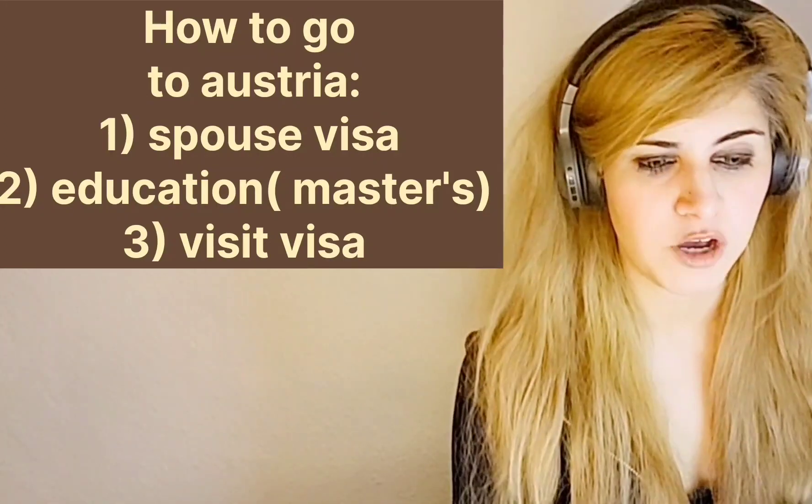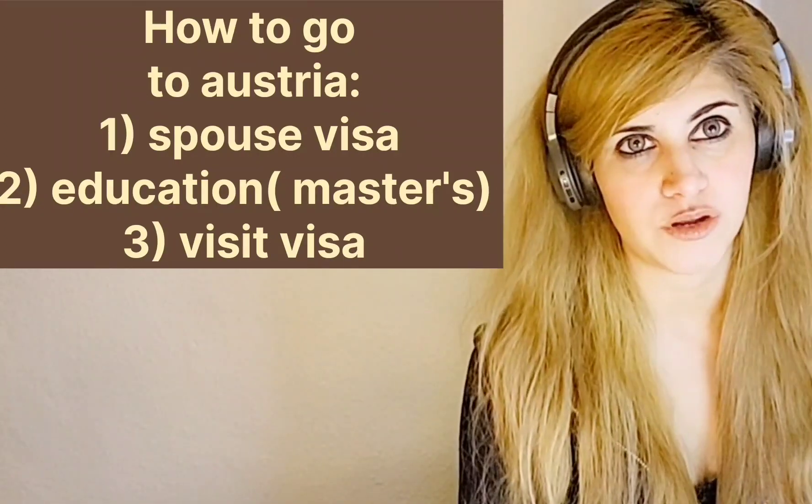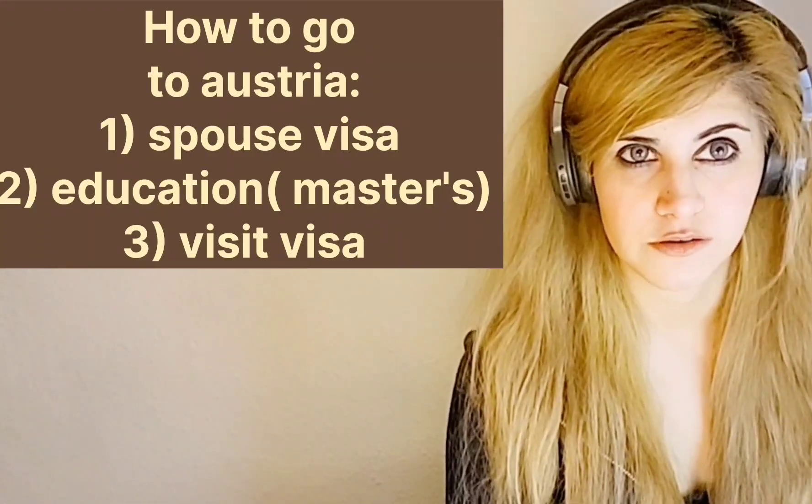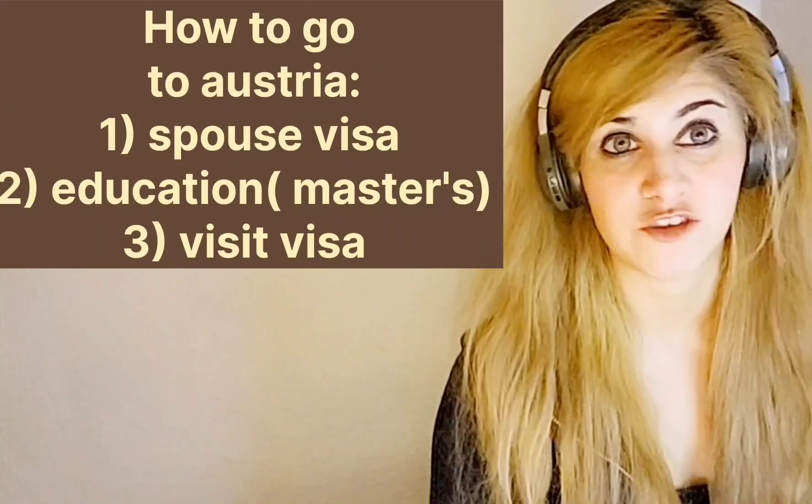For me, according to my opinion, the easiest way would be if you can get education — if you're not a spouse of an Austrian citizen. It's a much faster route to go through the education route: apply for masters, go there, you should already have learned German before, apply for nostrification, and you're good to go. So these are the three ways by which you can actually go to Austria.